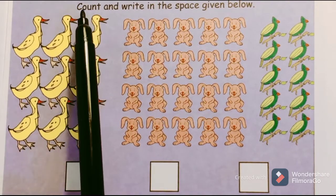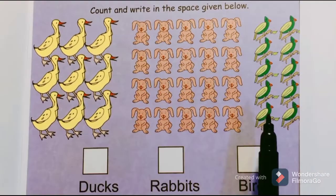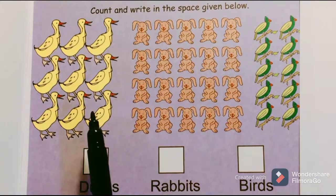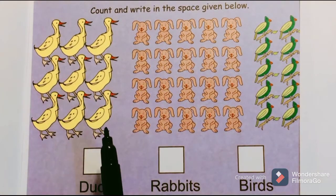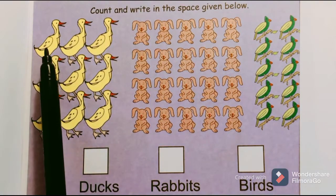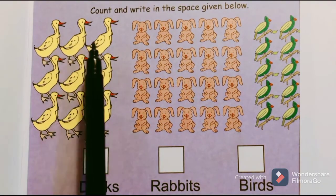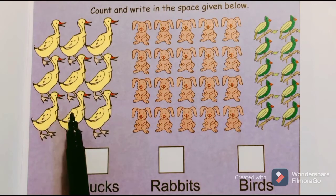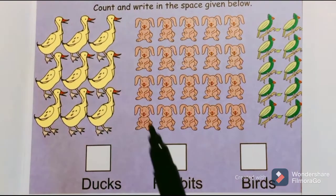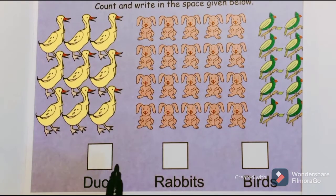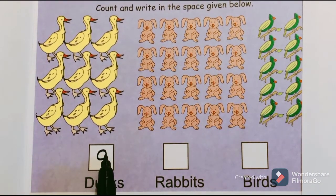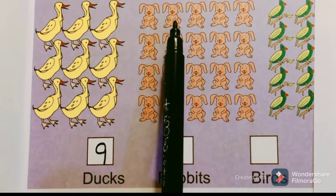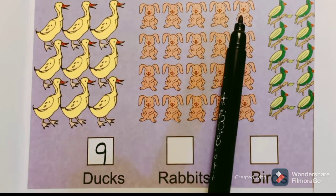Look at the next problem — count and write in the space given below. There are ducks, rabbits, and birds. Let us count the number of ducks: one, two, three, four, five, six, seven, eight, nine — there are nine ducks. Now let us count the number of rabbits: one, two, three, four...